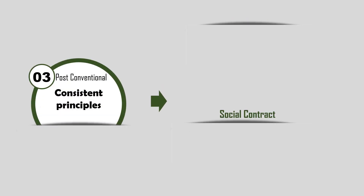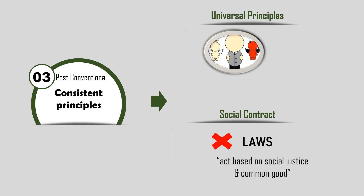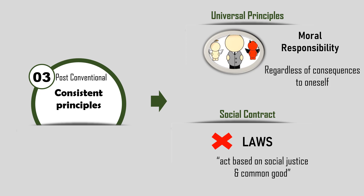Stage 5 is Social Contract. Laws that are wrong can be changed. One will act based on social justice and the common good. And finally, Stage 6: Universal Principles. This is associated with the development of one's conscience, having a set of standards that drives one to possess more responsibility to make societal changes regardless of consequences to oneself. Examples of such persons are Mother Teresa or Martin Luther King Jr.